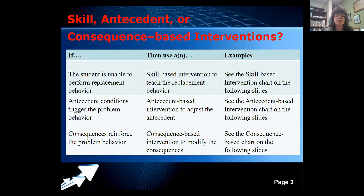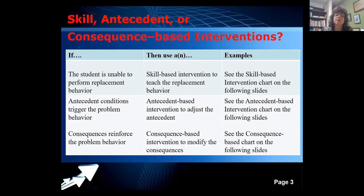If an antecedent condition showed up on your ABCs and observations that triggers the problem behavior — keeping the student from benefiting from teaching and learning — then you want to use an antecedent-based intervention to adjust the antecedent. Part of the issue is you must know where the behavior starts to happen, and that brings us to the function piece. If consequences reinforce the problem behavior, you want to use a consequence-based intervention that will modify the consequences.